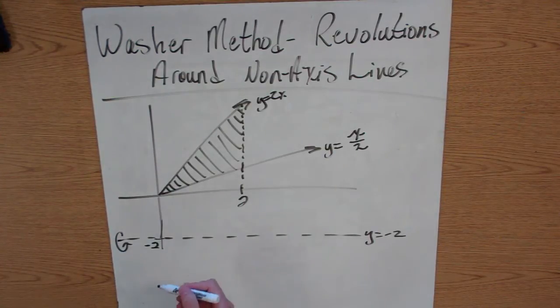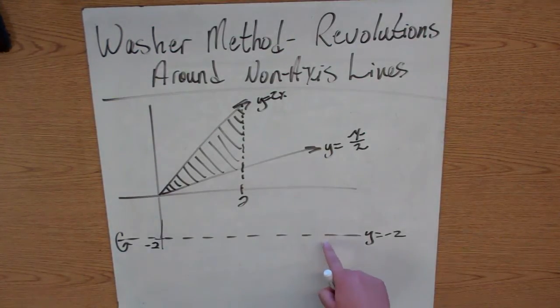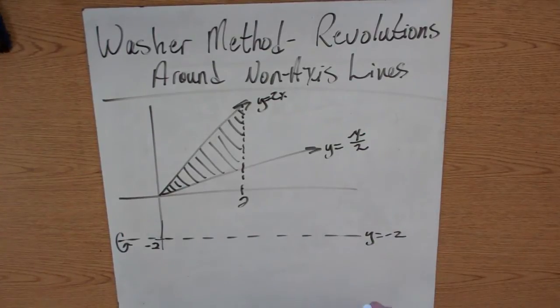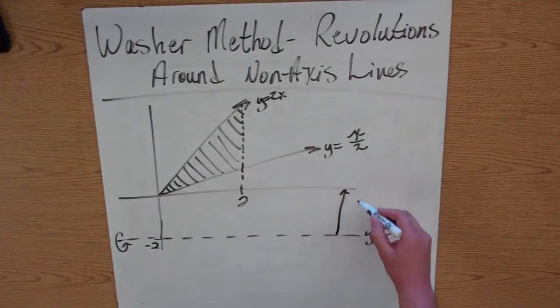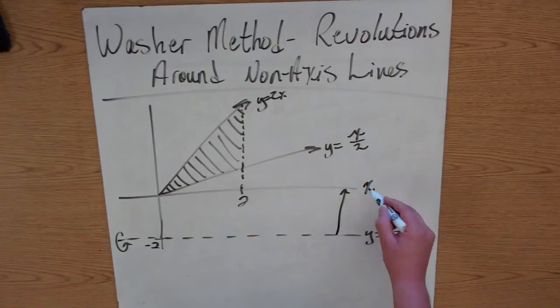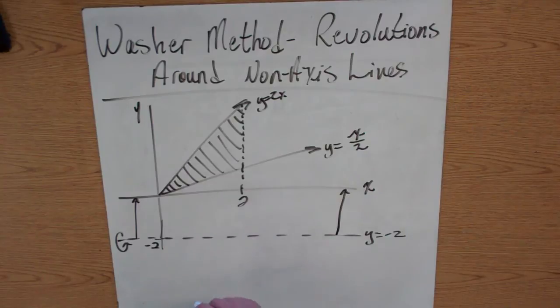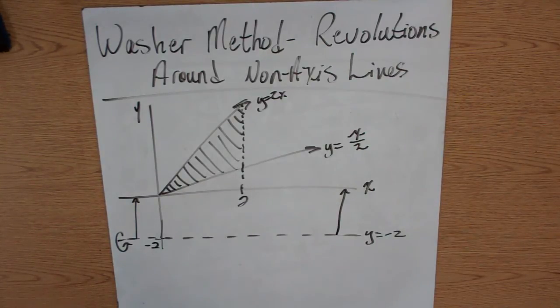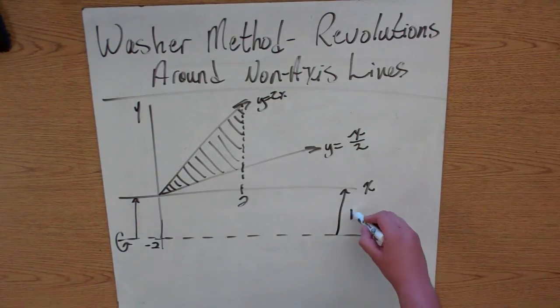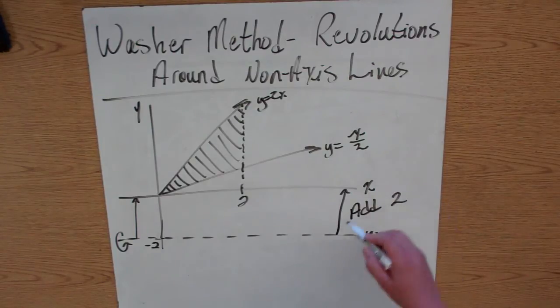Well, this is what you have to think about. We want to get this line to an axis. So if we want to raise this line up to the x-axis, because this is the x-axis and of course this is the y, what do we have to do to this line to get it up to the x-axis? Well, we need to add 2.